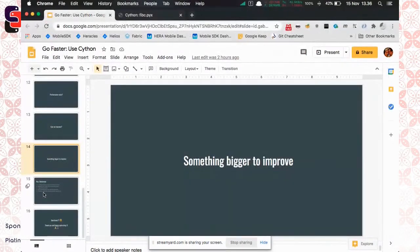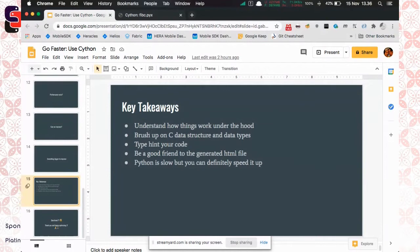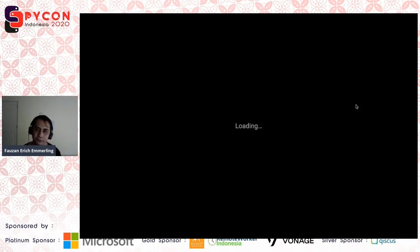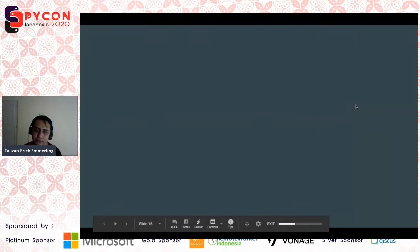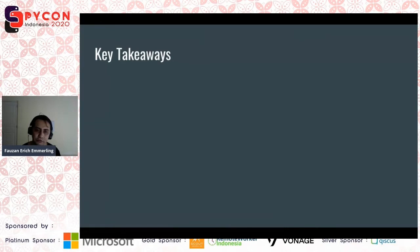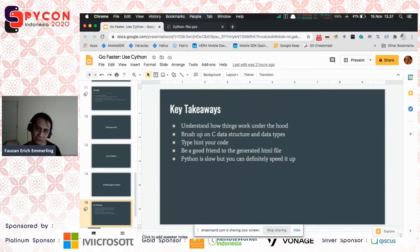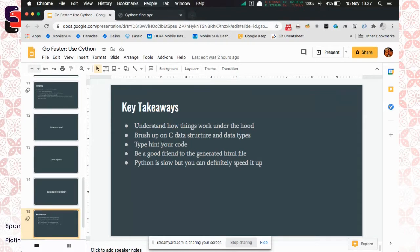Let me think of some key takeaways from optimizing. First of all, you need to understand how things work under the hood. You need to brush up and see data structure and data types so you can understand. Use typing for your code. You have to be a good friend to generate that HTML file so you can read and understand what's happening. Basically Python is slow, but you can definitely speed it up using measures in Cython and how you write your code.